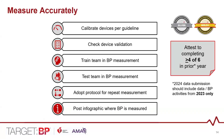The existing questions around Measure Accurately include: Did you calibrate your blood pressure devices per guideline recommendations during 2023? Did you check if they're validated? Did you train and test your team in blood pressure measurement? Have you adapted protocols for confirmatory measurements through repeat in-office measurement, ambulatory blood pressure monitoring, or self-measured blood pressure? Do you use a job aid or post an infographic where blood pressure is measured in your clinic? Attesting to at least four out of six of these for 2023 makes you eligible for Silver or Gold Plus status.